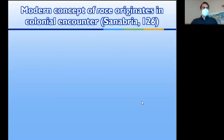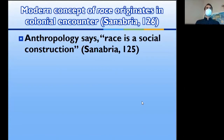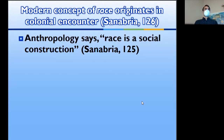As Sanabria says on page 126, this modern concept of race — our ideas about race today — originate in the colonial encounter. Anthropology has spent a lot of time outlining why race is actually a social construction. It's a category that we have made socially and culturally and imposed upon biological variation. Anthropology has spent much of its existence fighting against racial categorizations that arose during this colonial period.